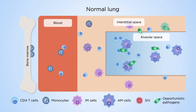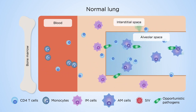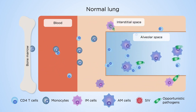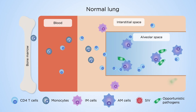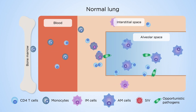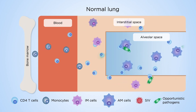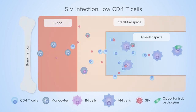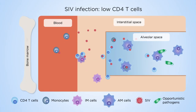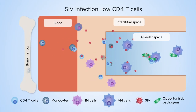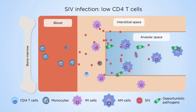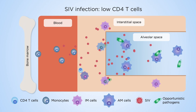Types of lung macrophages include short-lived interstitial macrophages and long-lived alveolar macrophages. Soon after HIV infection, CD4 cells become infected, die, decline, and are only partially replaced.